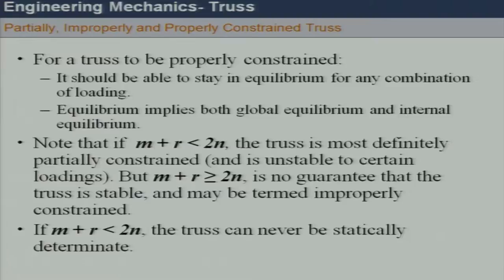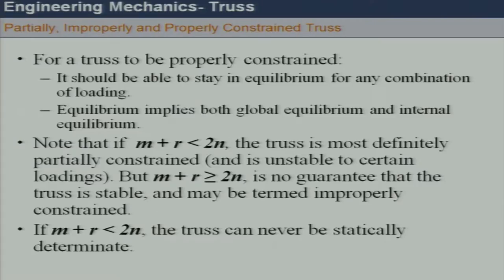There could also be trusses with internal instability. It is possible that m plus r equals 2n but the truss is still not stable. However, if m plus r is less than 2n, we can always say that the truss is unstable.